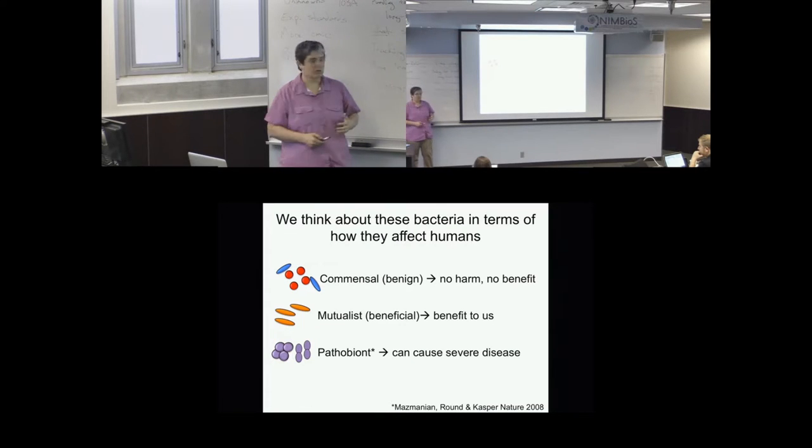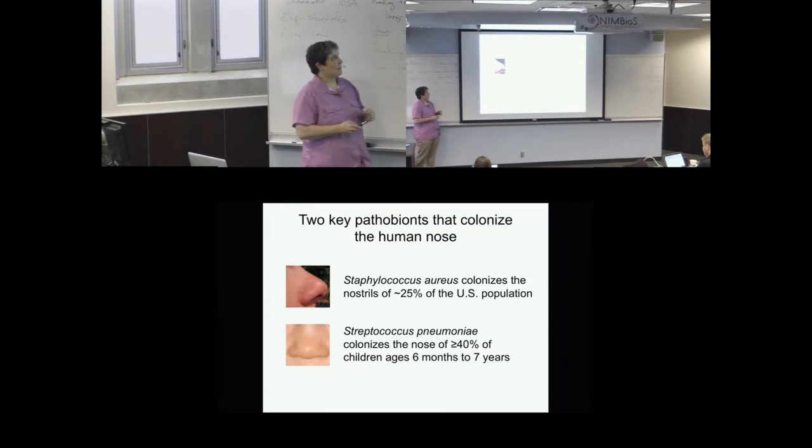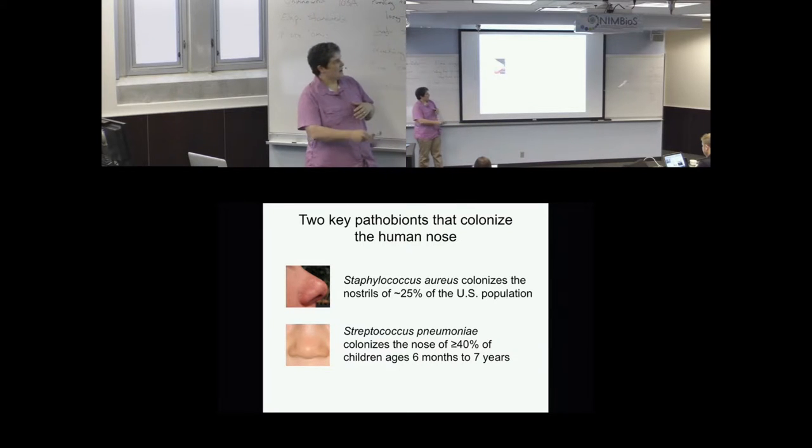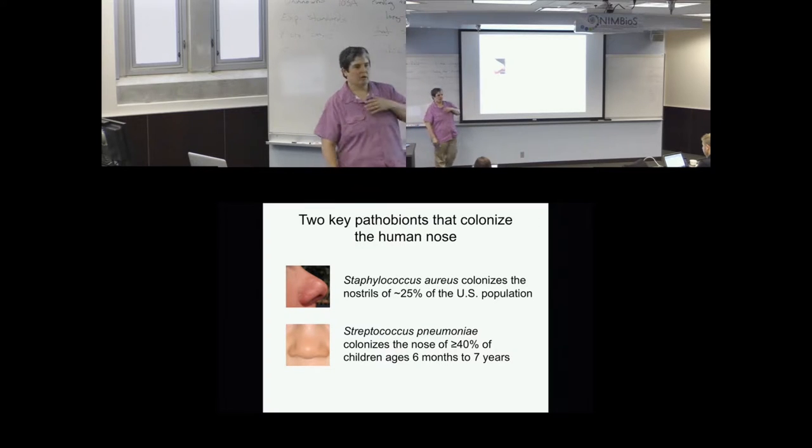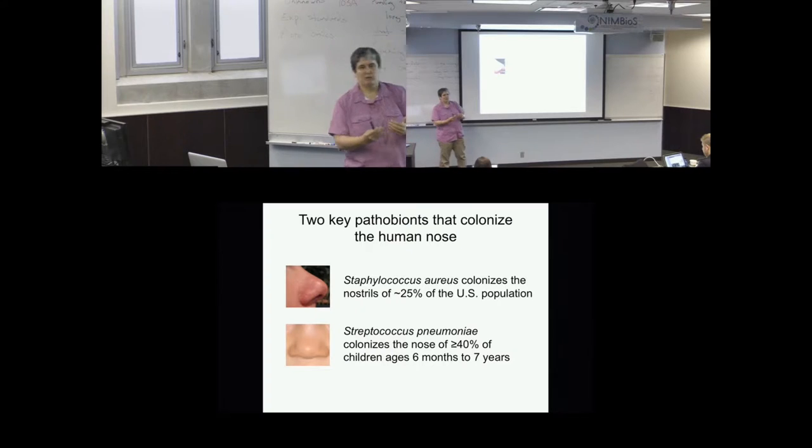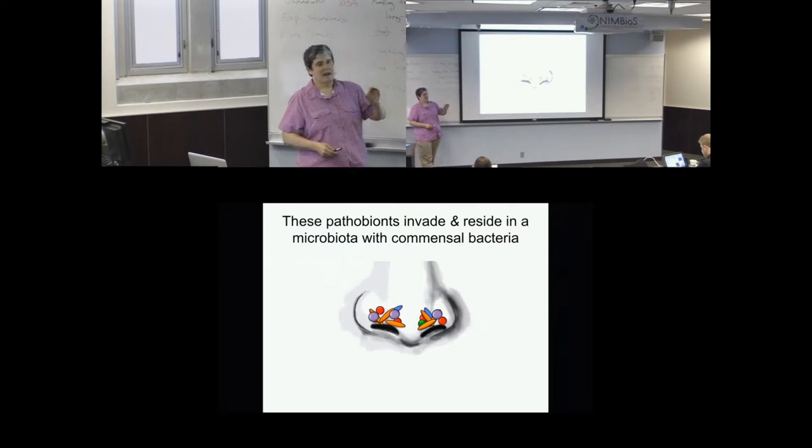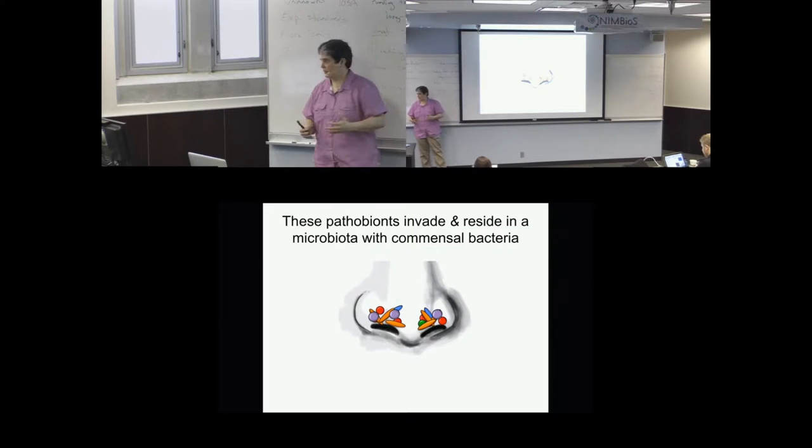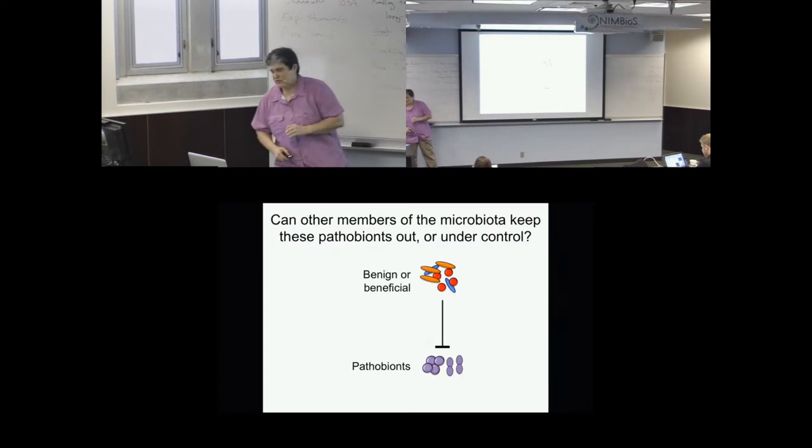My interest in the nose was really driven by my clinical experience and the fact that two human pathobionts commonly colonize the nose. On any given day, about a quarter of the U.S. population has Staph aureus happily living in the nostrils, and over 40% of children under the age of seven have Streptococcus pneumoniae living throughout their nasal cavity. These are the two pathogens we focus on in the lab. They have to interact with us, the host, and also invade and reside in a pre-existing microbial community made up of commensal bacteria we know a lot less about. In my lab, we're asking a simple question: can any other members of the bacterial microbiota in the nose keep these pathobionts out or at least under control?